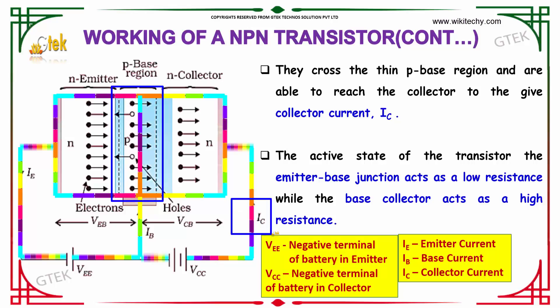In the active state of the transistor, the emitter-base junction acts as a low resistance, while the base-collector acts as a high resistance.